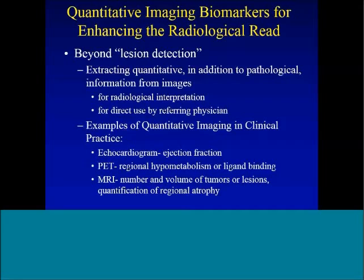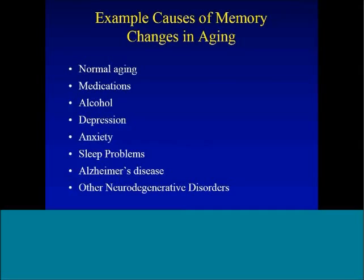There are examples of this in clinical practice, with echocardiogram being a very important quantitative imaging marker of cardiac function. When we send a patient off for an echocardiogram, we don't just want to know the structure of the heart and whether there are lesions. We actually want a measurement of ejection from the left ventricle — an ejection fraction — a trackable number we can watch over time and objectively compare to prior visits. We can also do this with PET scanning with regional hypometabolism or ligand binding, and in MRI with tumor or lesion volume. But the approach we're focusing on today is to quantify the regional atrophy of important structures.